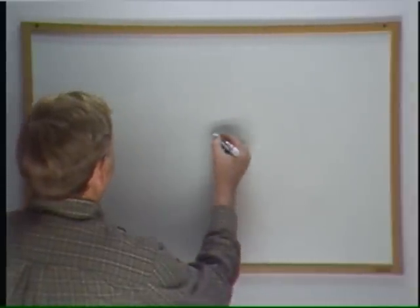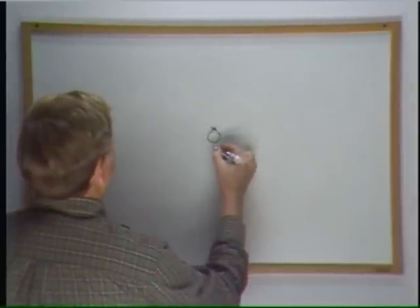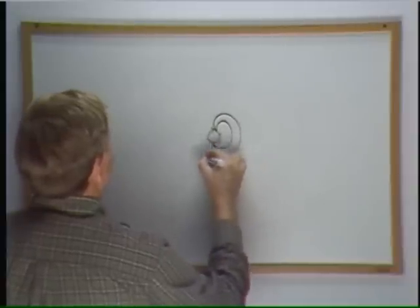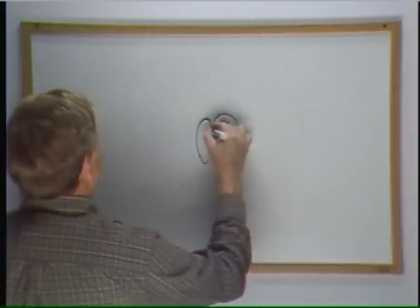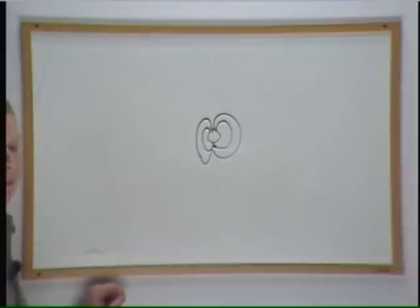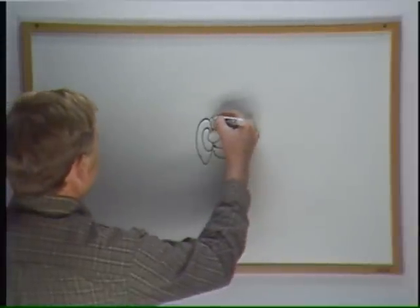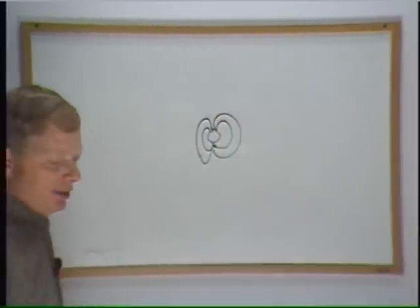Now first you have to understand what the atom is. The atom is a magnetic dipole. All dipoles have north and south magnetic monopoles orbiting in opposite direction which is what creates your dipole.